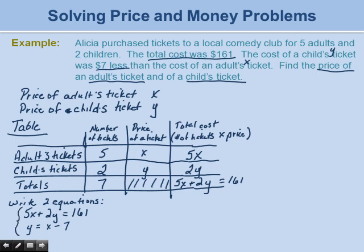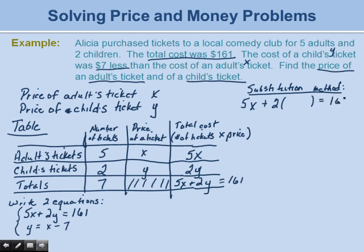We now have a system of equations. Since the second equation is already solved for Y, we'll use the substitution method. We substitute X − 7 in place of Y in the first equation. Now we have an equation with only X and can solve for it. Distributing the 2 gives us 5X + 2(X − 7) = 161, so 7X − 14 = 161.